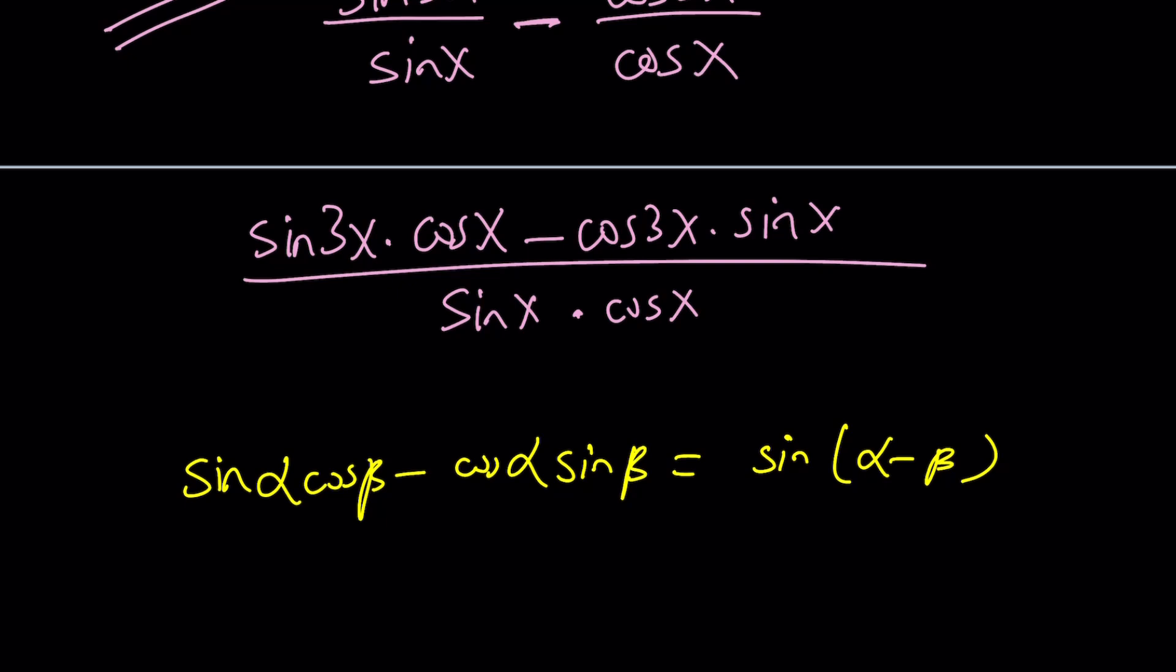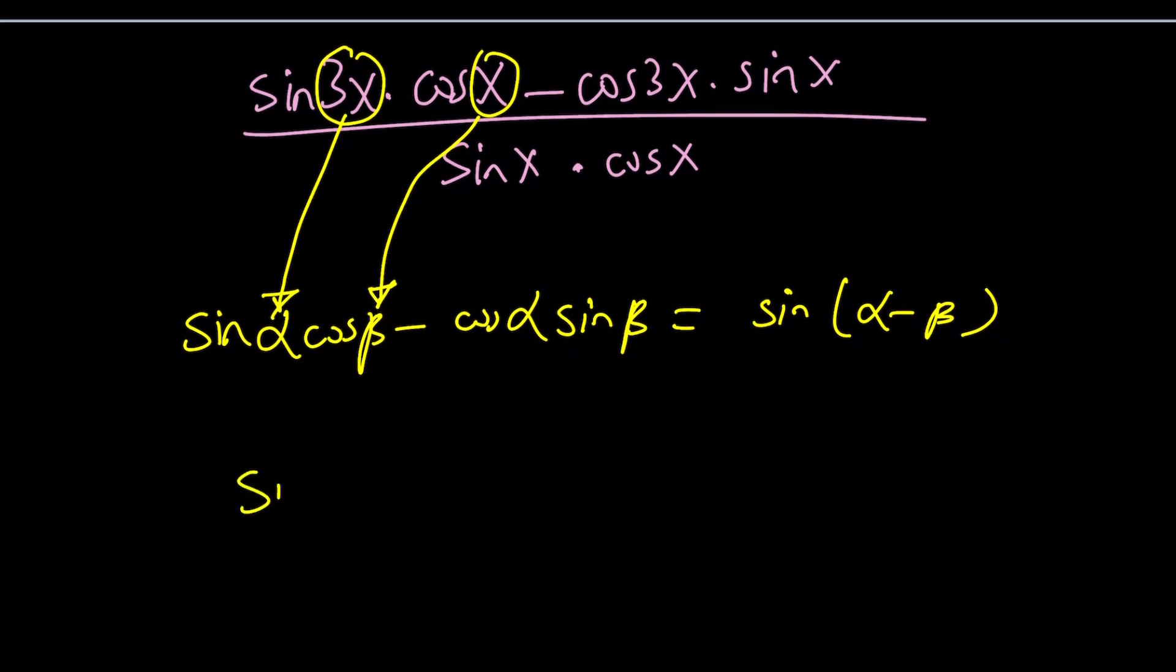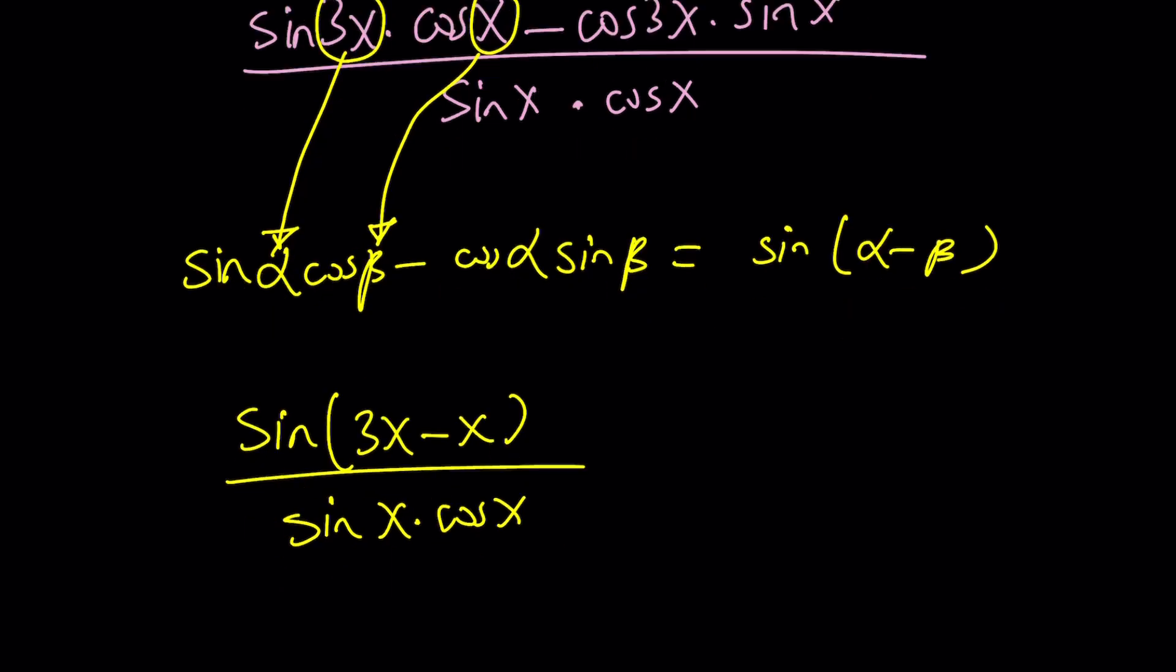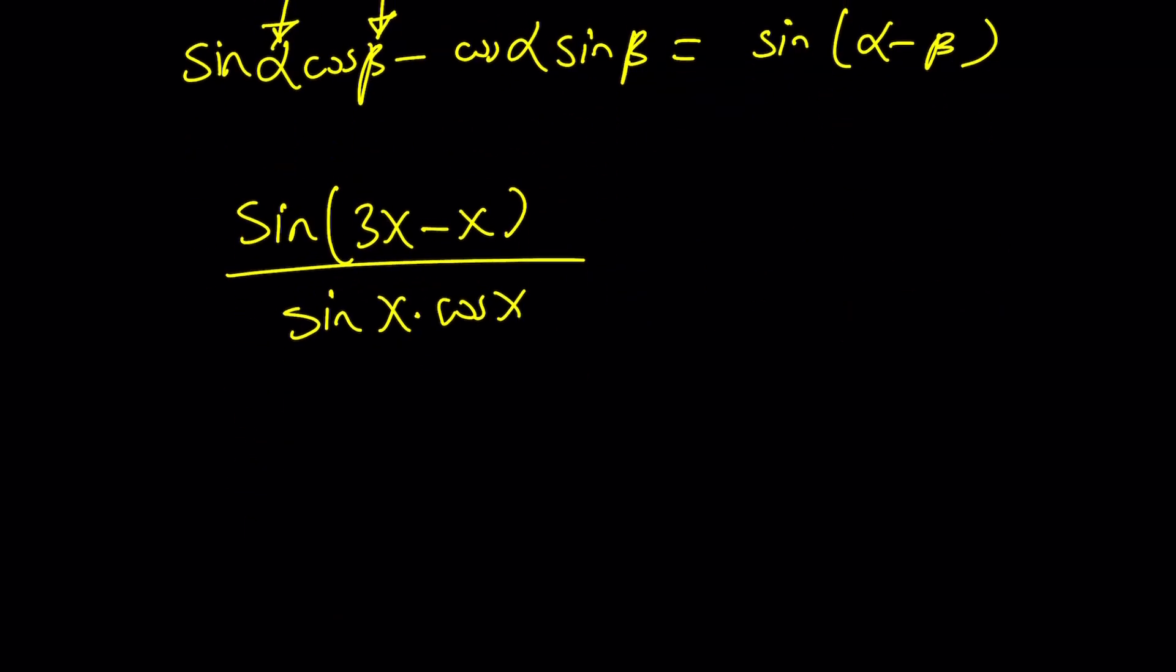So what does the numerator look like? If you know your identities, you'll hopefully recognize sine alpha cosine beta minus cosine alpha sine beta as sine alpha minus beta. These are called sum and difference formulas. It basically gives you a chance to find the sine or cosine or tangent of the sum or difference of two angles. And using these formulas, you can find sine 15 degrees and so on and so forth. So many other things. But the point is, this is my alpha and this is my beta. If you want to call it x, that's fine too. So the numerator is actually the same thing as sine of 3x minus x.